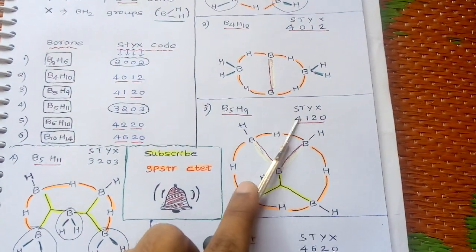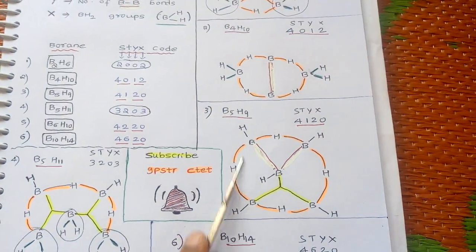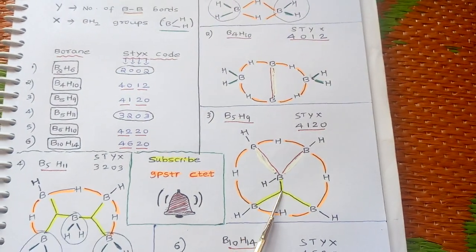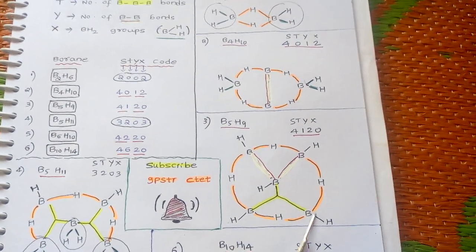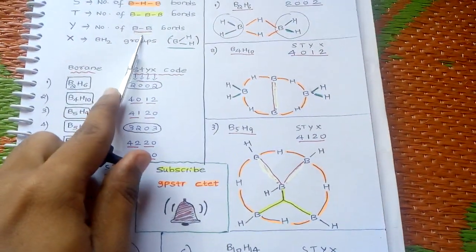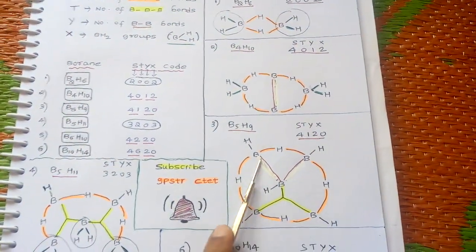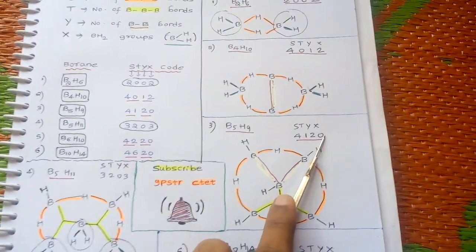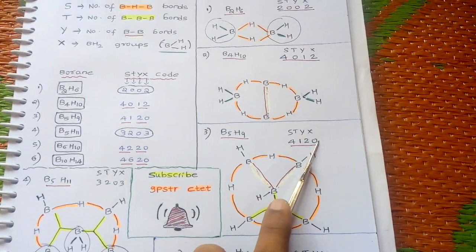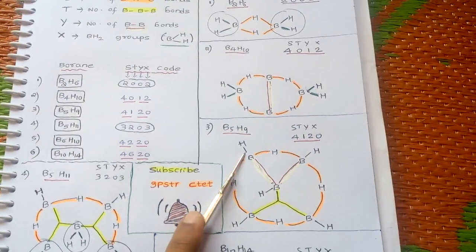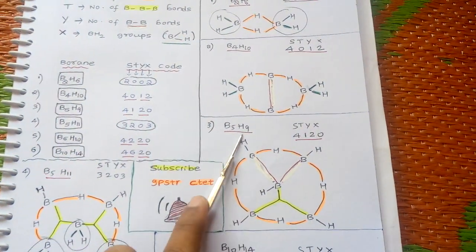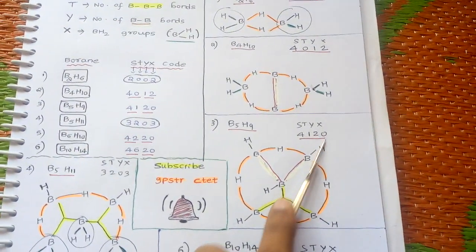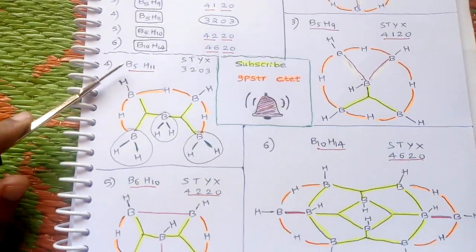For B5H9, the STYX code is 4120. The BHB bonds are four. T, the BBB bonds, is one — shown in highlighted color. Y, the BB bonds, is two — shown in red color. X is zero — there are no BH2 groups here. Don't confuse BH groups with BH2 groups; here only BH groups are present, so X equals zero.